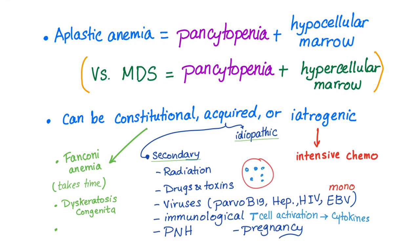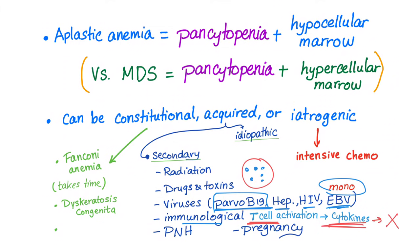Viruses such as Parvo B19, big time, hepatitis, HIV, and EBV — Epstein-Barr virus — which causes infectious mononucleosis, also known as mono. Immunologically, many diseases. The basic mechanism is activation of T cells, the T lymphocytes, which will secrete cytokines. The cytokines will destroy your myeloid cells, not the lymphoid myeloid stem cells. Also, there is a huge association with paroxysmal nocturnal hemoglobinuria as well as pregnancy. Note that delivery of the baby will end this aplastic anemia.